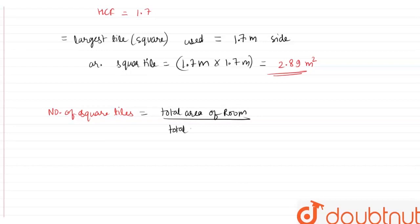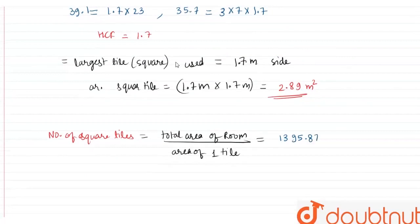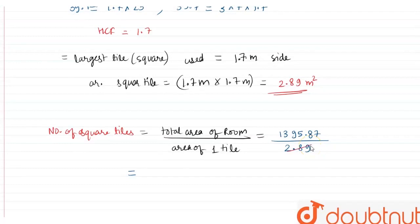So total area was 1395.87 divided by the area of the one tile, that is 2.89, all right? So this turns out to be 483. So this is the number of tiles that will be used.